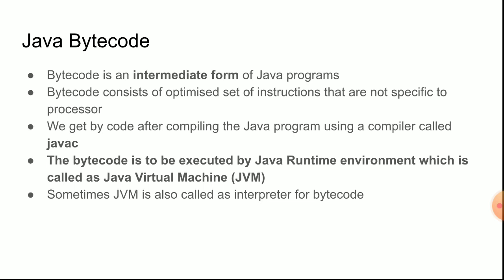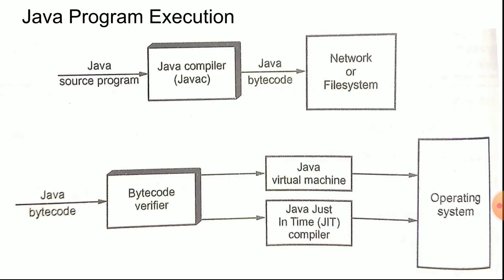JVM is also sometimes called an interpreter for bytecode, because of step-by-step execution — each and every line is checked while executing. As soon as you type the program and make a syntax error, JVM will automatically show the mistake that you have done. That is what JVM is all about.